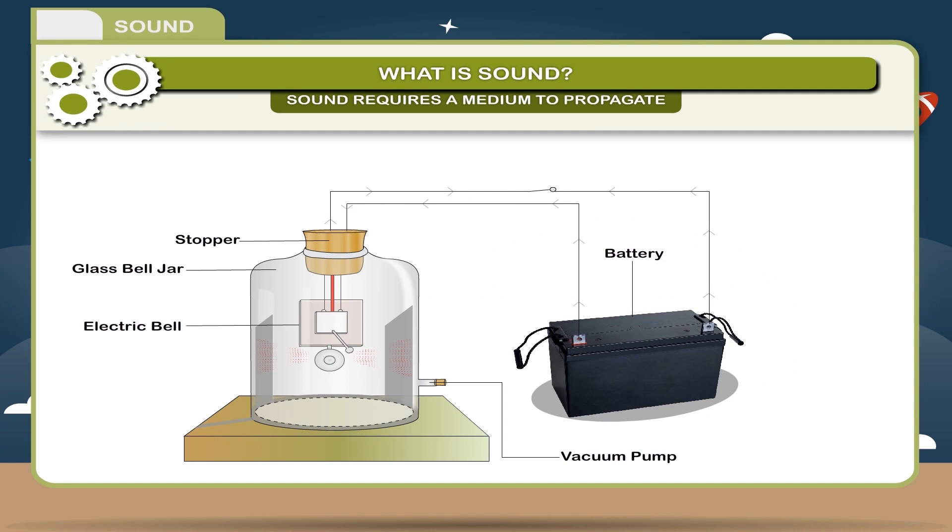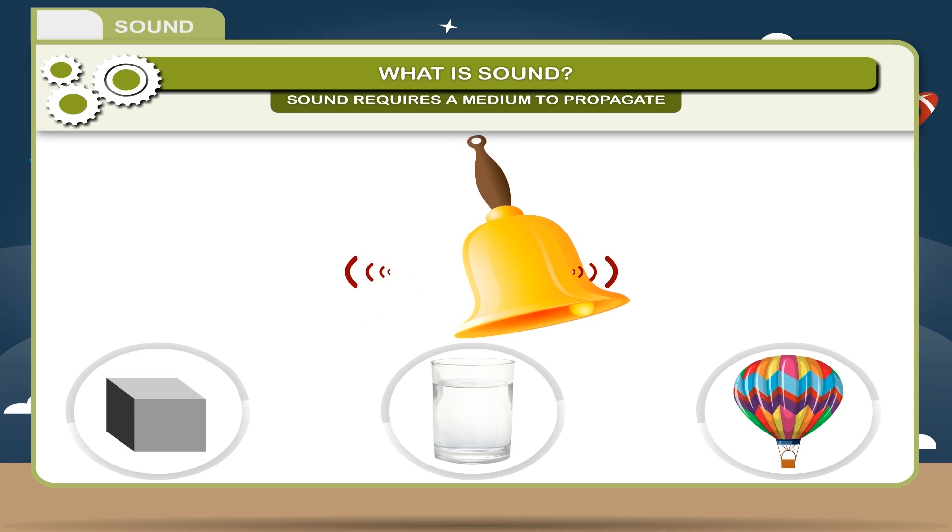When vacuum was created, the sound could not travel from inside the jar to outside. Hence, we can say that some kind of medium, solid, liquid, or gas is necessary for the propagation of sound.